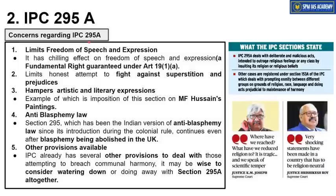However, several questions are often raised about Section 295A regarding hate speech. It is seen as contradicting freedom of speech and expression under Article 19(1)(A). It is quite possible that an honest attempt to fight against superstition and prejudices could be suppressed — for example, if someone makes a statement against animal sacrifice and people of another religion consider it an insult to their faith, progressive ideas could be suppressed by this section. It also has a chilling effect on artistic and literary expression.